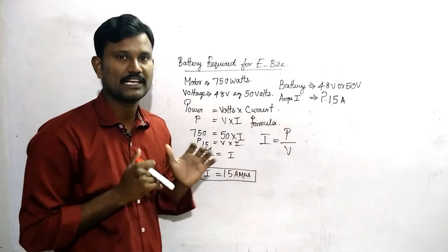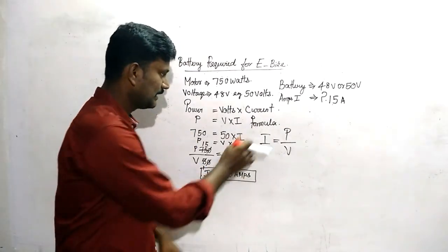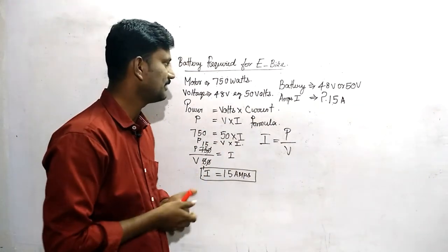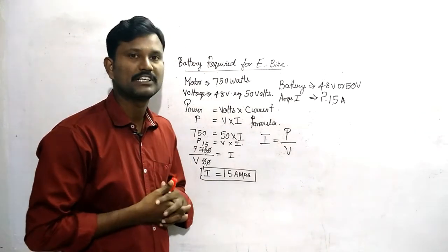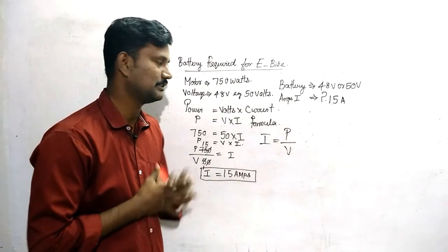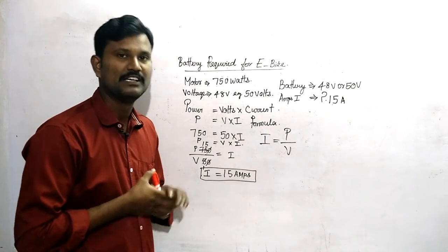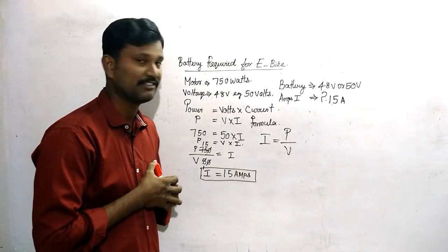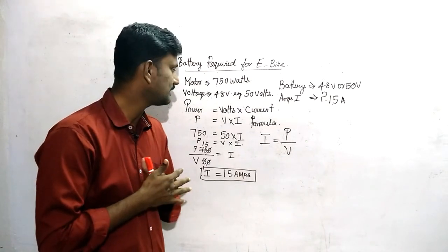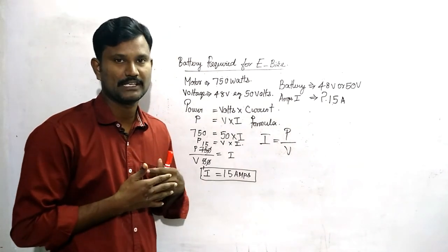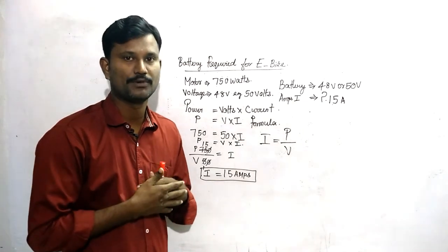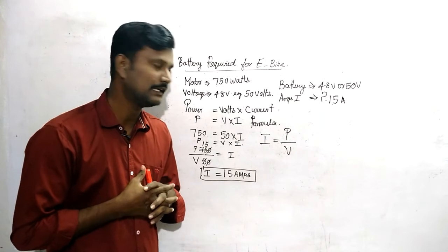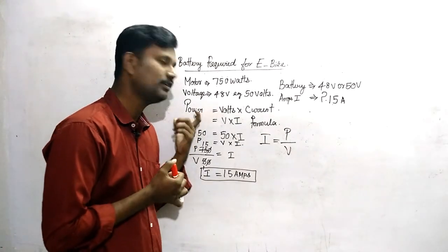So if you have electrical knowledge, you will be able to get the right battery. If you have a battery, you will be confused. This is the minimum. If you like this video, please like, comment, share and subscribe. If you have a battery with 36V, it will be used to use 24V. If you use the battery, you will be able to use full RPM.